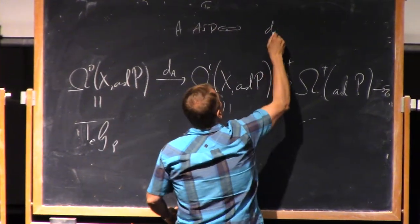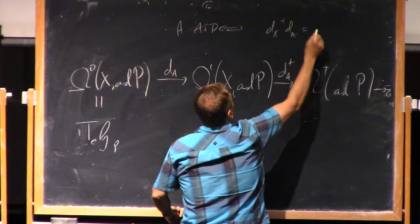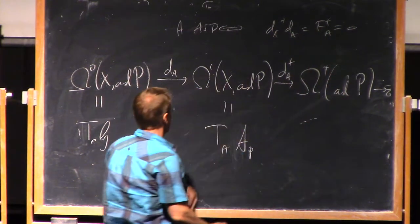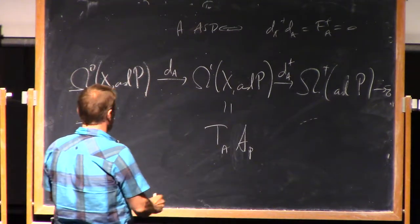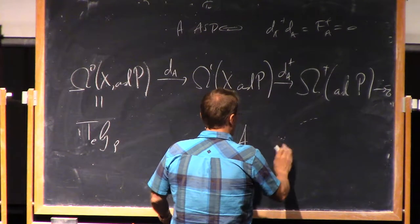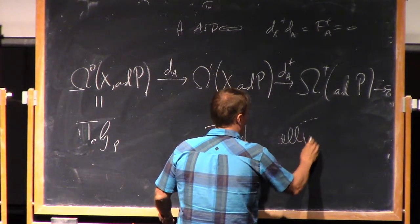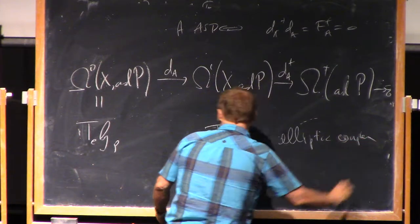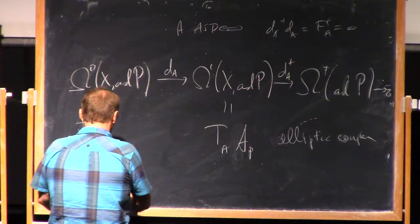You notice that A is ASD. That implies that d plus, this composition is F plus, is zero. So this is a complex. It's an elliptic complex, as you saw.